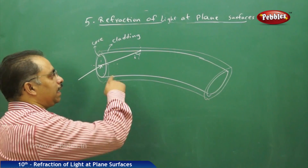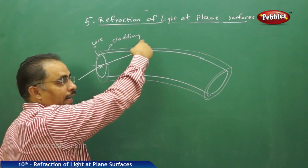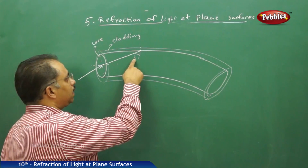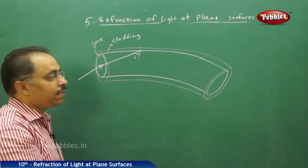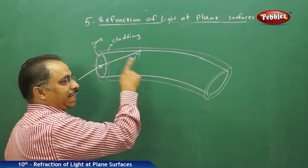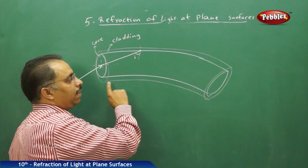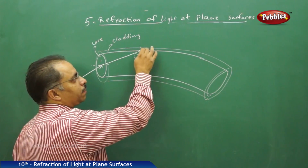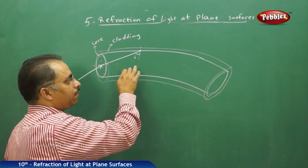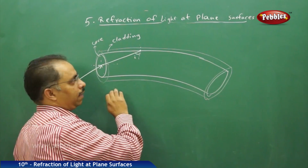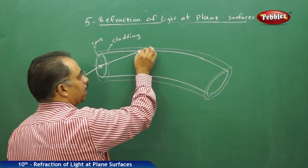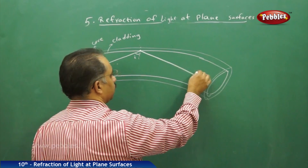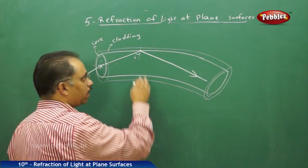Now the light ray is intended to travel from the core to the cladding. In such a scenario, if the angle of incidence here is greater than the critical angle of the core with respect to the cladding, then it will not undergo refraction — it will undergo total internal reflection and travel internally this way.